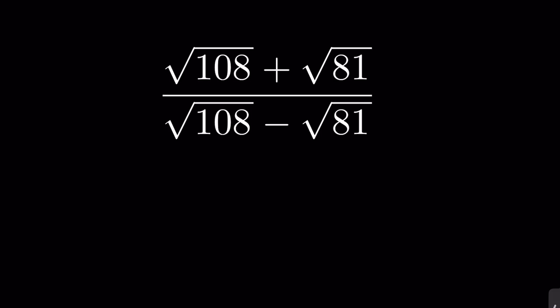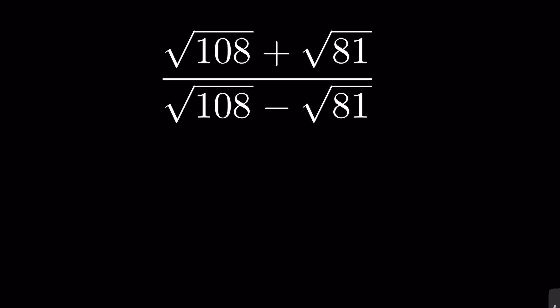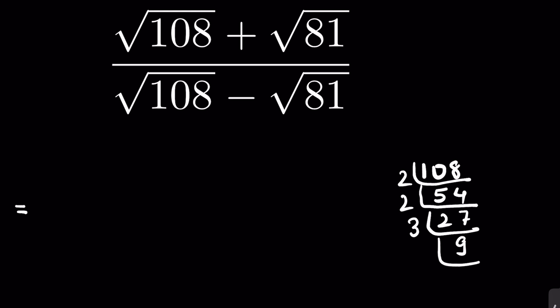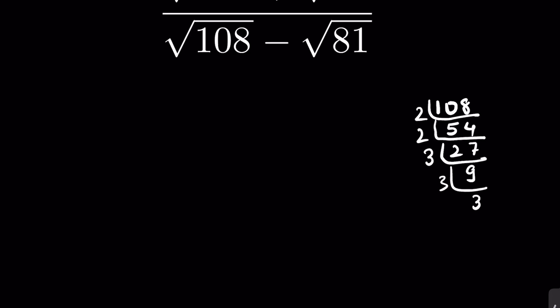Evaluate or simplify: (√108 + √81) / (√108 - √81). Let's first simplify the square roots. We factor: 2×54=108, and 3×27=108, while 3×27=81 helps us break these down.